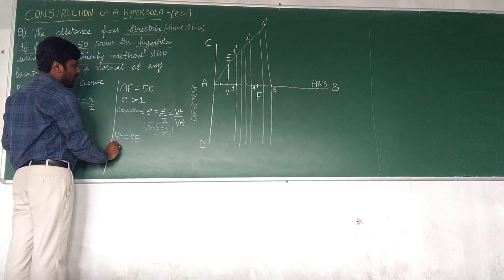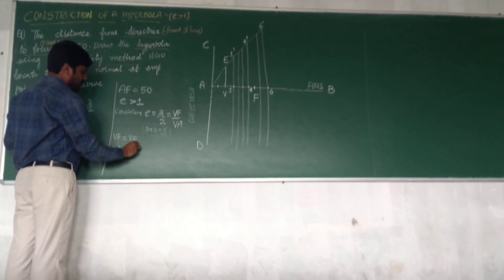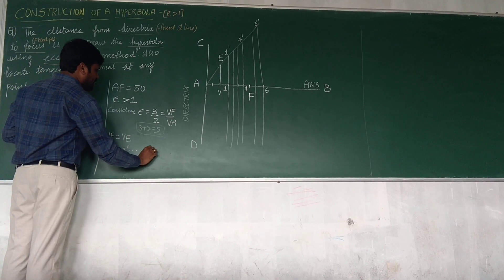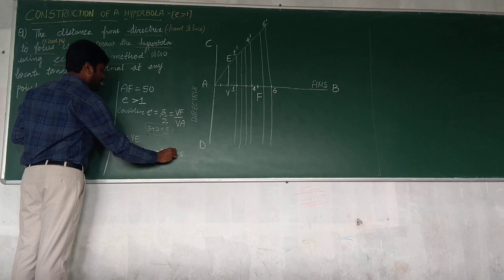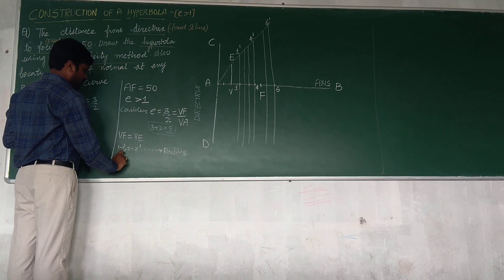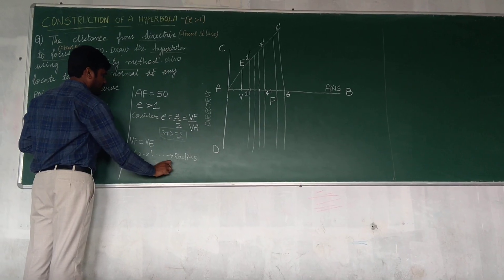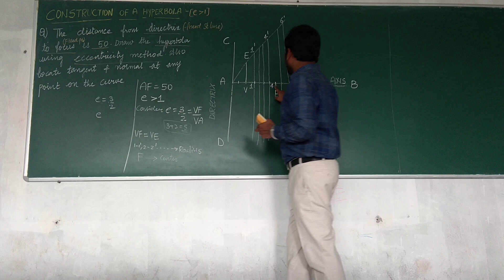Next, what is next? I need to trace the curve now. In order to trace the curve, my 1, 1 dash, 2, 2 dash and so on will be the center radius. Radius, all these points are radius. And F is center. F as center, cutting either sides.